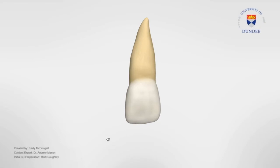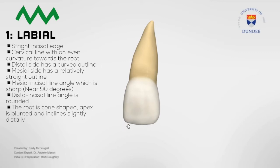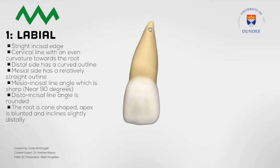From this viewing aspect we can observe a straight incisal edge and a cervical line with an even curvature towards the root. The distal side has a curved outline whereas the mesial side has a relatively straight outline, resulting in a mesial incisor line angle which is sharp near 90 degrees. The root is cone shaped, and the apex is blunted and usually inclines slightly distally.